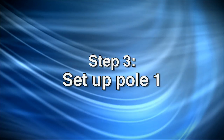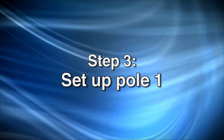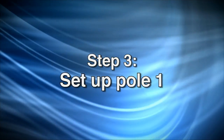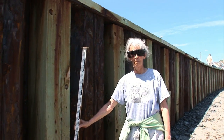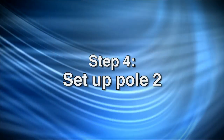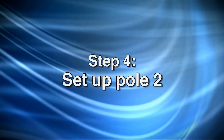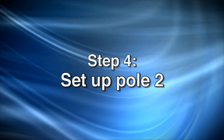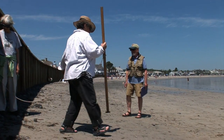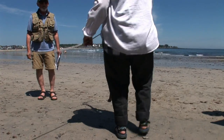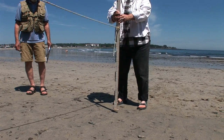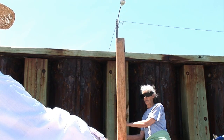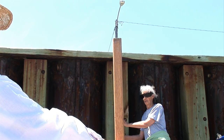For step three, set up pole one. Person one stands pole one on the ground immediately in front of the starting point and steps away from the pole. For step four, set up pole two. Person two walks their pole toward the ocean until the rope runs out. Place pole two on the ground so that it lines up with pole one, the starting point, and the vertical marker.